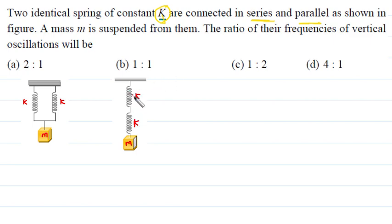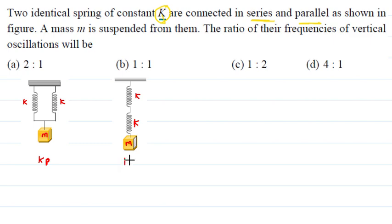Since frequency is proportional to under root of k, the ratio Ns upon Np equals under root of Ks upon Kp. For series: 1/Ks equals 1/k plus 1/k, so Ks equals k/2. For parallel: Kp equals k plus k equals 2k. The general formula of frequency is 1 upon 2π under root of k upon m.